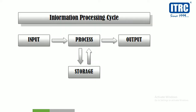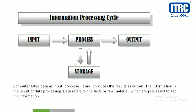Let us understand the information processing cycle. In the information processing cycle, we provide data as input. After the process, we get output. That output is called information.